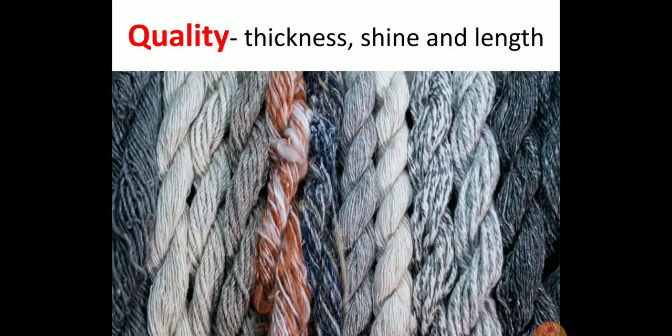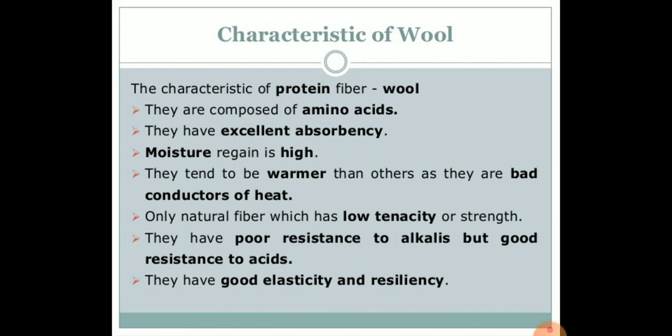Thickness, shine, length and strength are various measures to identify the quality of wool. Wool has many features: they are composed of amino acids, which further make protein, so we can say wool is a type of protein. They have excellent absorbency and high moisture regain. They tend to be warmer than others as they are bad conductors of heat. Wool is the only natural fiber which has low tenacity or strength. It has poor resistance to alkalis but good resistance to acids. It has good elasticity or resiliency, meaning it has the ability to spring back into shape.